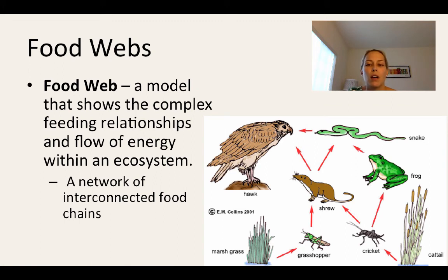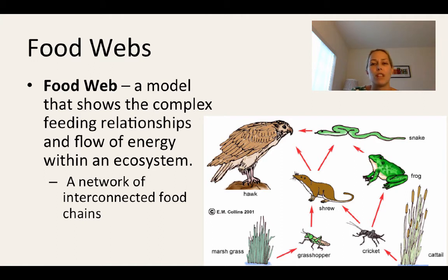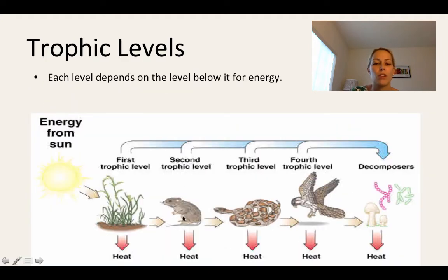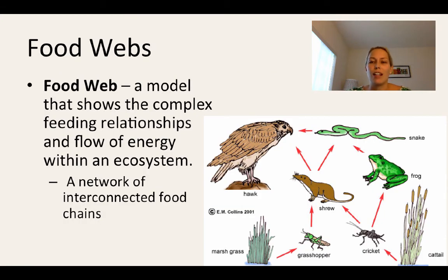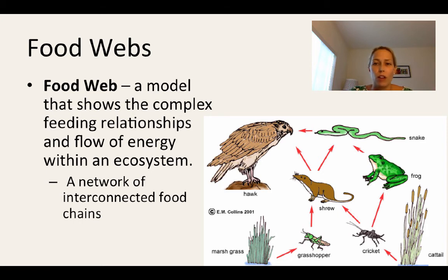A food web, compared to a food chain, is a more complex representation of the feeding relationships and flow of energy in an ecosystem. It's a more accurate view because a food chain only includes a few organisms, but ecosystems usually have many more. A food web shows all of the feeding relationships and the ways energy can flow, making it a more accurate view of energy flow in an ecosystem.